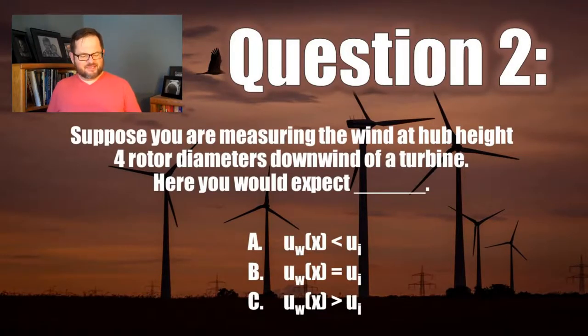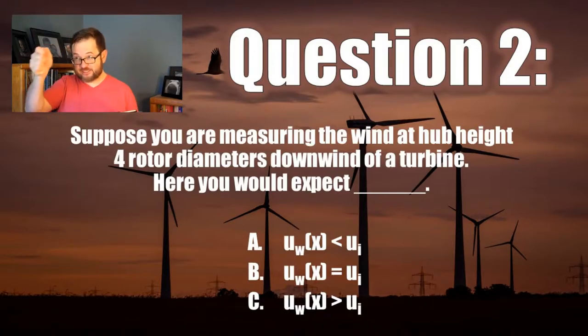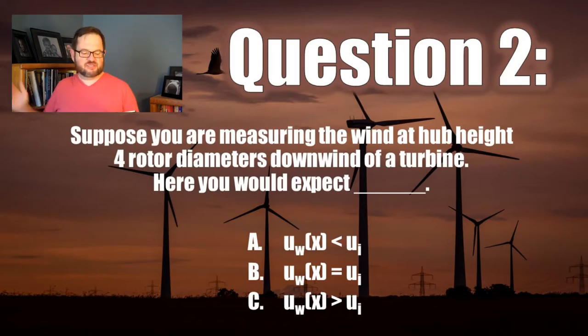Alright, welcome back. Let's talk about this business of UW and UI. Suppose you're measuring the wind with an anemometer on a pole or a meteorological mast or something at hub height, so we're at the same height as the hub, and we're about four rotor diameters downwind from the turbine itself.